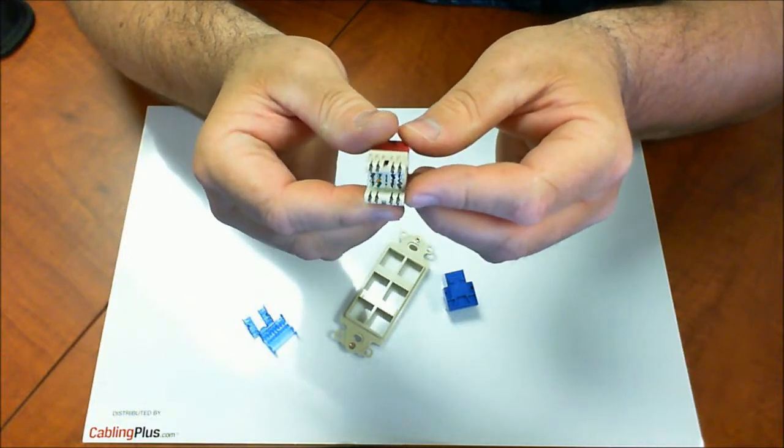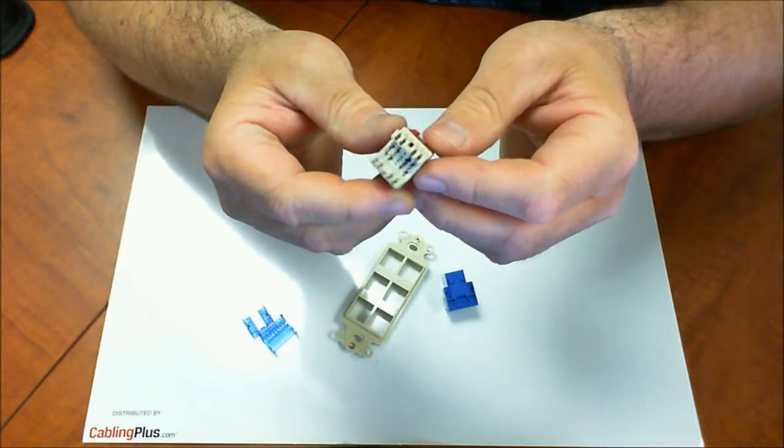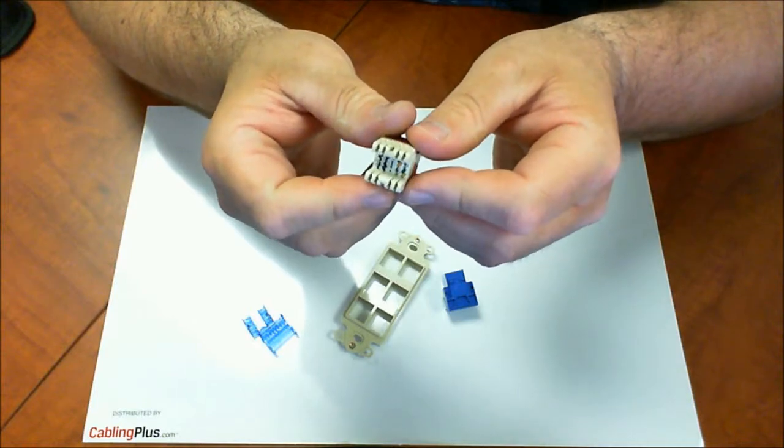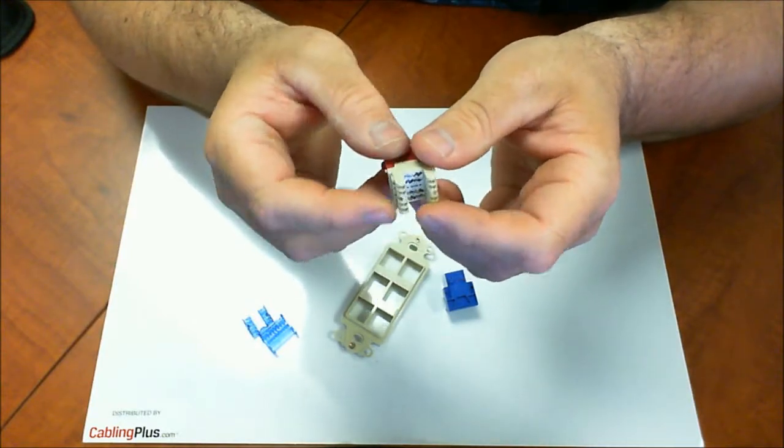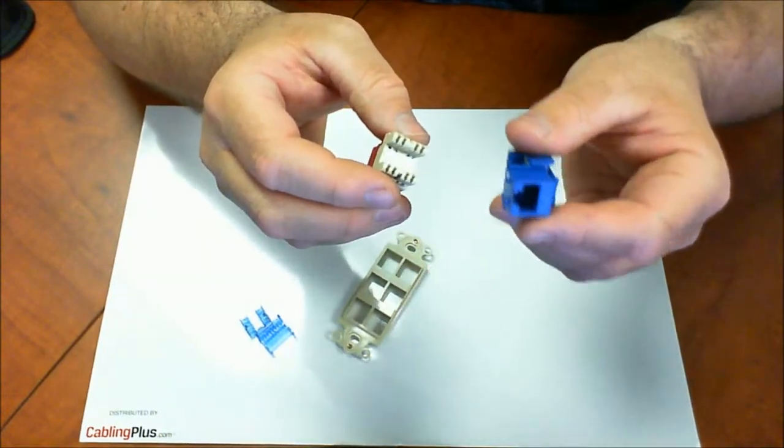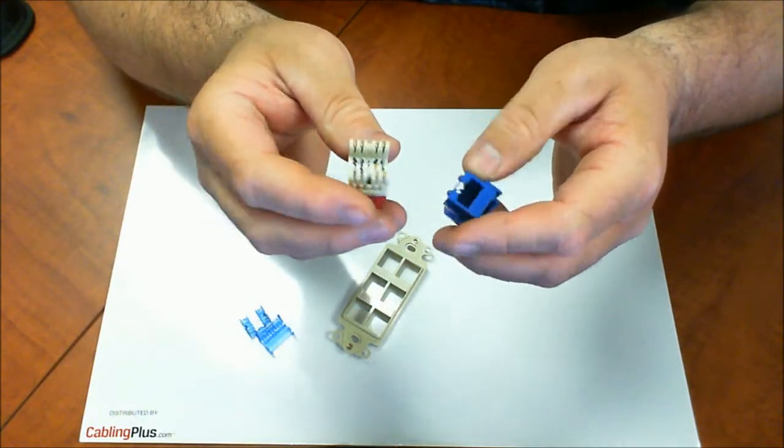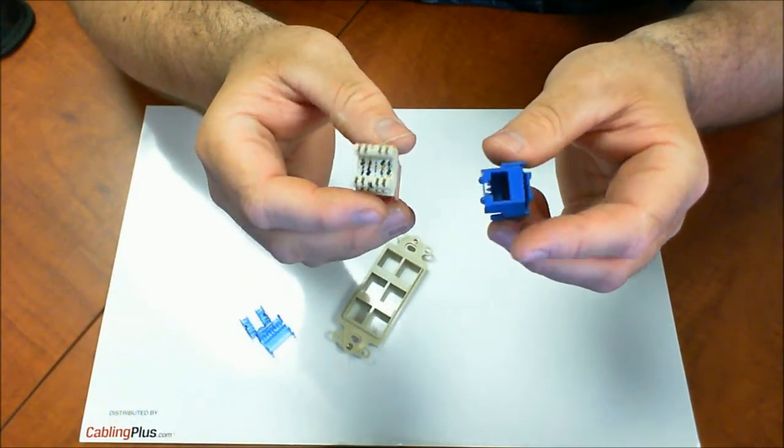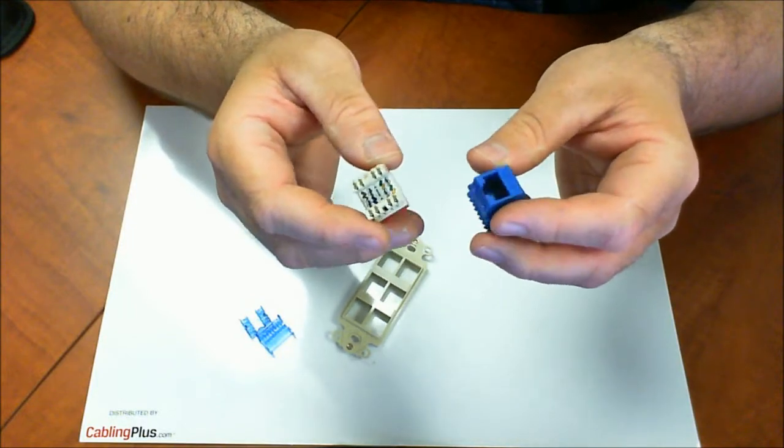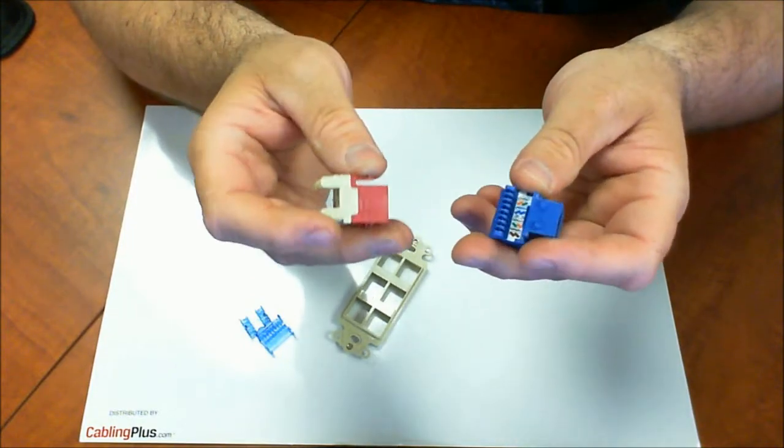So they've done a good job of putting a lot of thought into working applications in the field and they've created the products that best support them. So again you got your EZ and then you have your HD. So evaluate your installation, evaluate your wall plates, the type of jacks you're going to use, and choose the connectors that best support that.